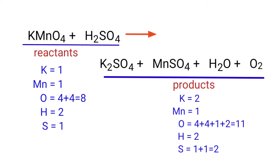To balance the chemical equation we need to make use of coefficients. A coefficient is a number that we place in front of a chemical formula.